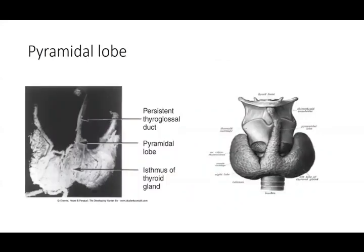The pyramidal lobe is shown in the center, with the isthmus and left and right lobes of the thyroid gland. The thyroglossal duct normally degenerates; any remnant becomes the pyramidal lobe or a cyst. The pyramidal lobe is an accessory lobe attached above to the hyoid bone by the levator glandulae thyroideae.